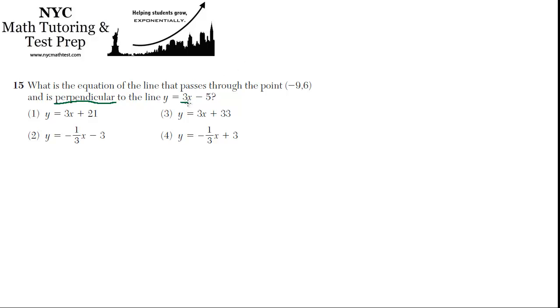So, this original line has a slope of 3. Our line is going to have a slope of negative 1 third. It's the opposite sign, and take the inverse. So, it's 1 over 3.